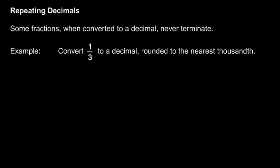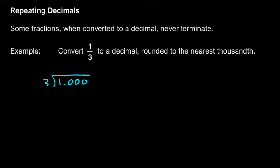We're told to convert 1 third to a decimal and then round to the nearest thousandth. To convert 1 third to a decimal, we remember that the fraction bar means division. So 1 third means 1 divided by 3. Let's do that — let's do 1 divided by 3 and put some zeros out here so we can do the division.